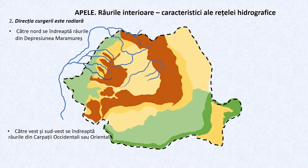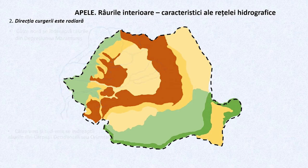Următoarea grupă de râuri se îndreaptă către vest și sud-vest. Acestea își încep cursul fie de pe latura vestică a Carpaților Orientali, fie din Carpații Occidentali.